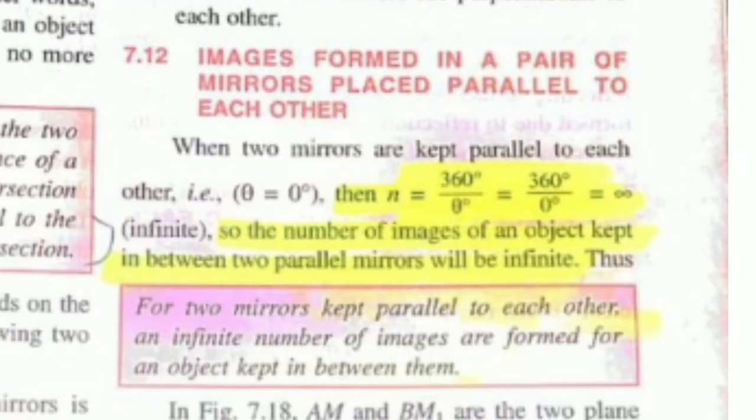Case 2: If n equals 360 divided by theta is even, the number of images is always n minus 1 for all positions of the object, no matter if it is placed symmetrically or asymmetrically.